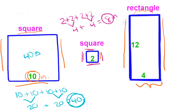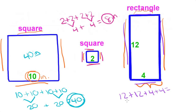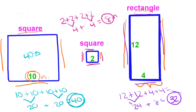For the rectangle, you'd have to add these two sides and then the two sides. So 12 and 12 plus 4 and 4. 12 and 12: 2 and 2 is 4, 1 and 1 is 2, giving 24. Then 4 and 4 is 8. 24 plus 8: put down the 2, carry over the 1, 2 and 1 is 3. It's 32 units.